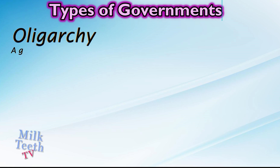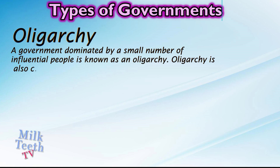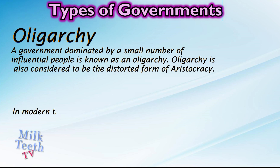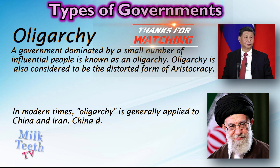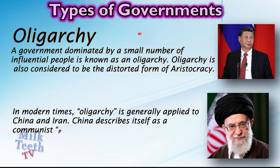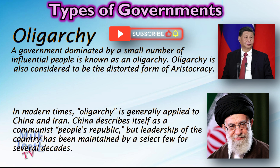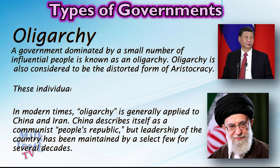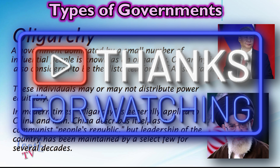Oligarchy: A government dominated by a small number of influential people is known as an oligarchy. Oligarchy is also considered to be the distorted form of aristocracy. In modern times, oligarchy is generally applied to China and Iran. China describes itself as a communist People's Republic, but leadership of the country has been maintained by a select few for several decades. These individuals may or may not distribute power equitably.